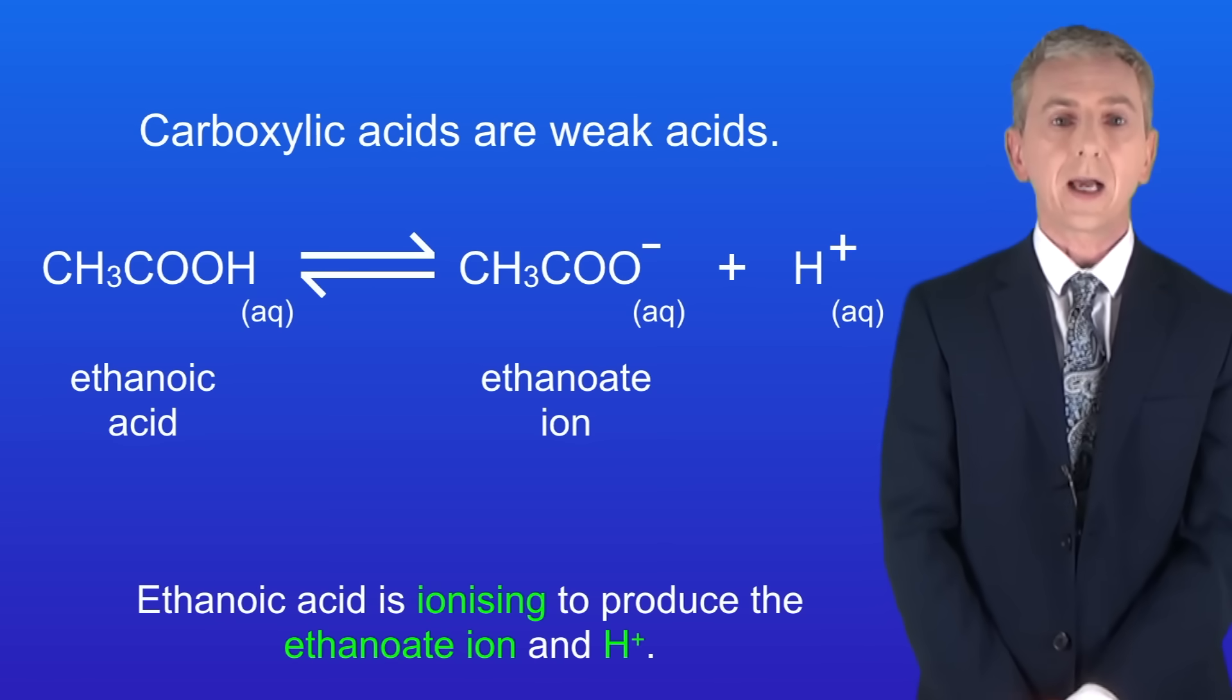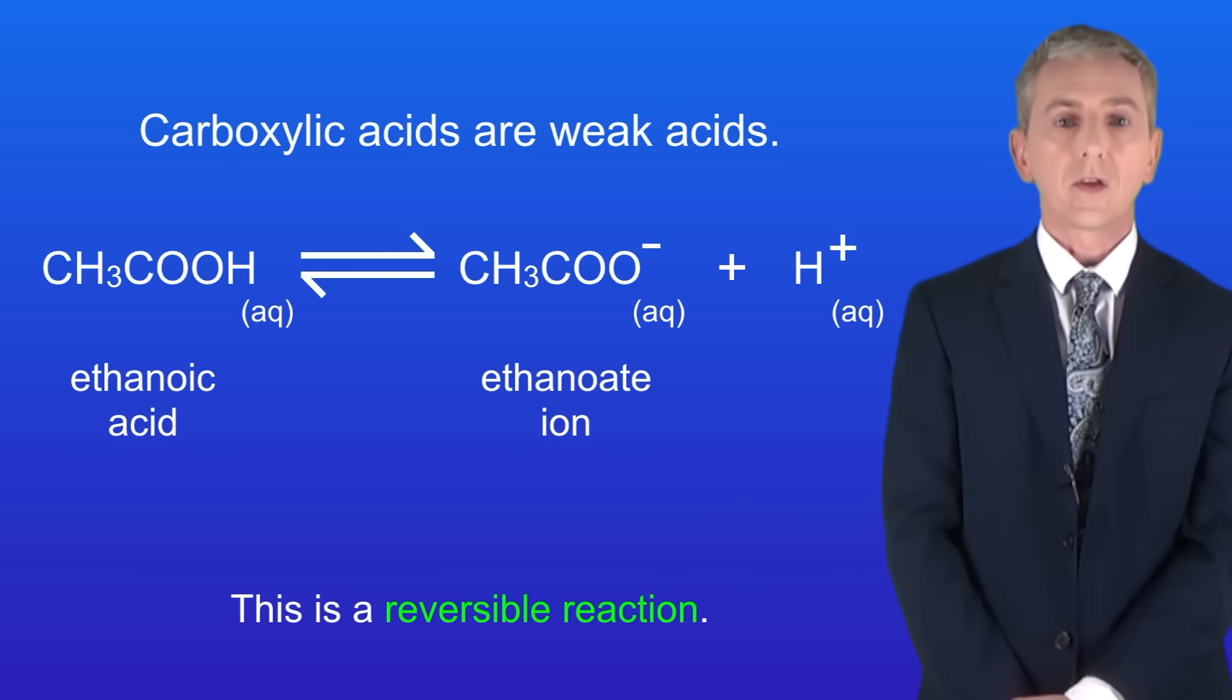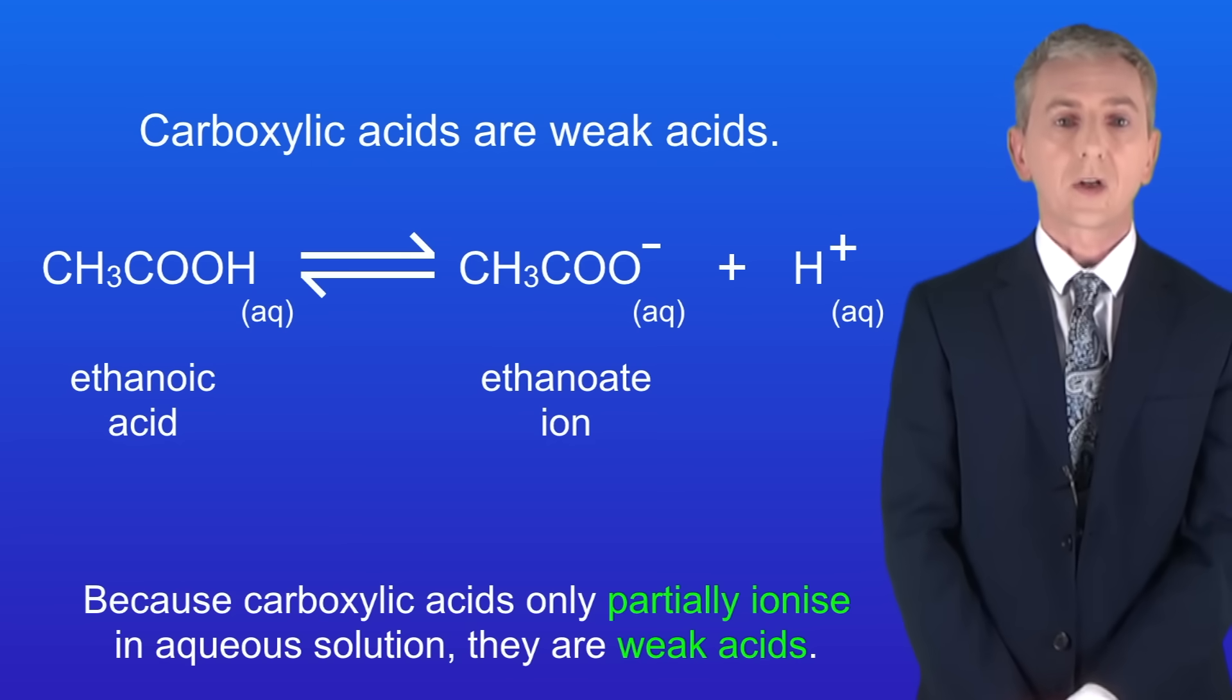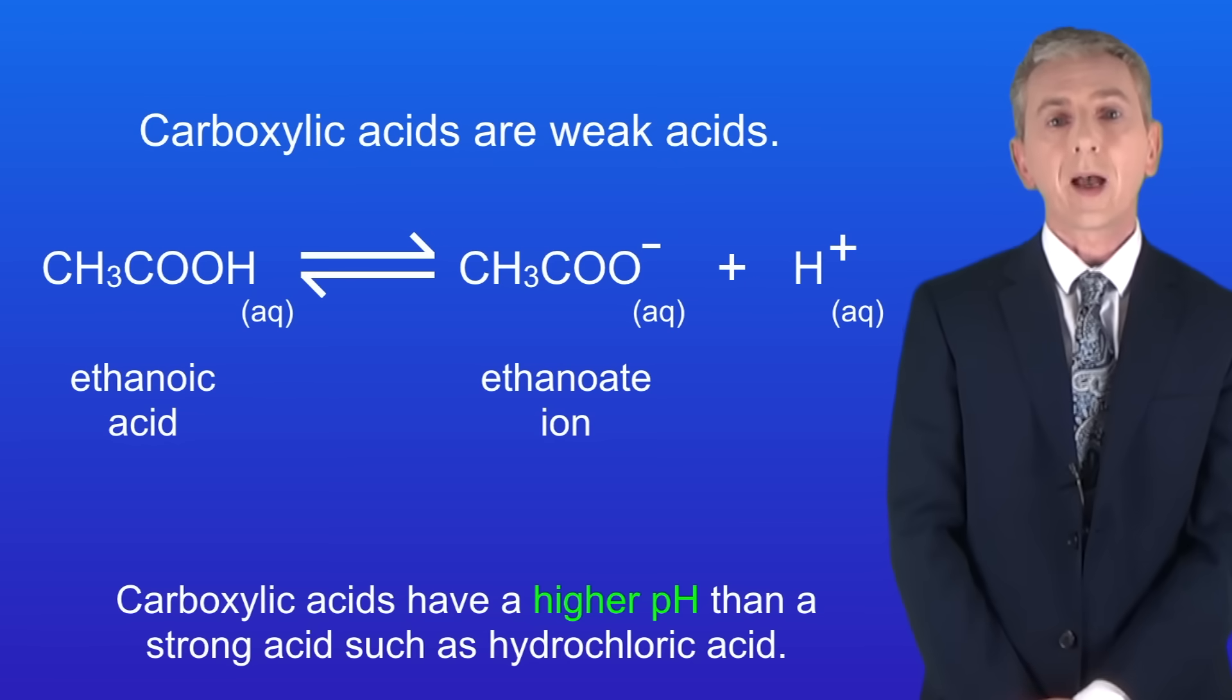In this case, ethanoic acid is ionizing to produce the ethanoate ion and H+. As you can see, this is a reversible reaction. That means that the ethanoate ion and the H+ can recombine to form ethanoic acid. Because carboxylic acids only partially ionize in aqueous solution, they are weak acids. That means that carboxylic acids have a higher pH than strong acids such as hydrochloric acid.